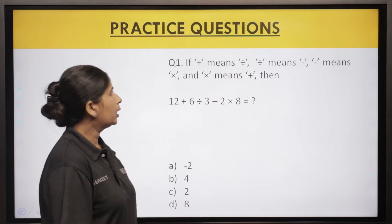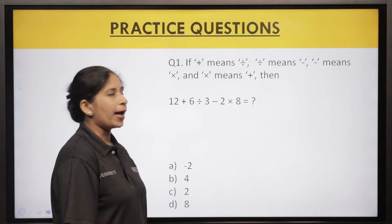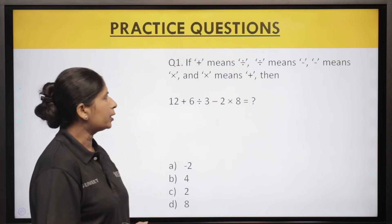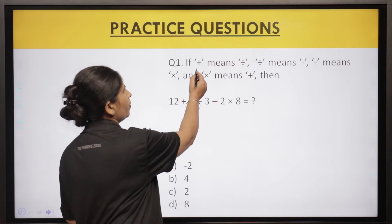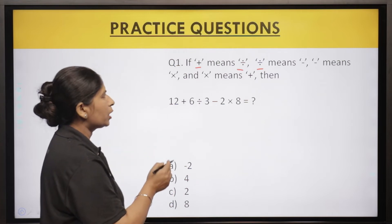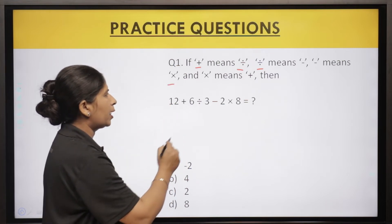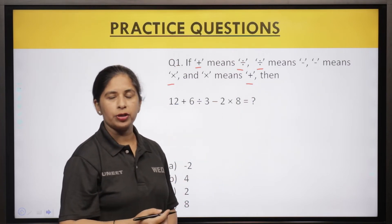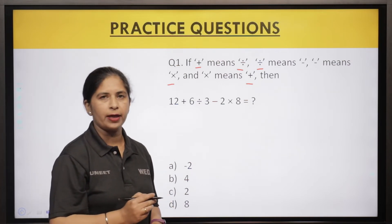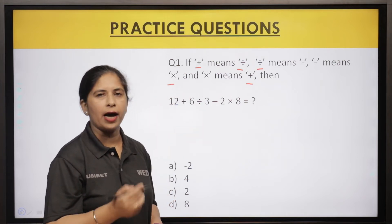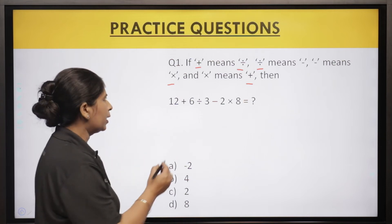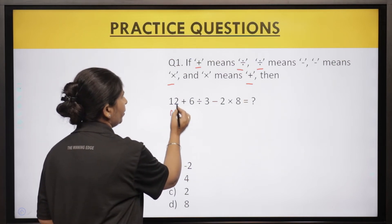Let's start solving a few sample questions. The first question is: if plus means divide, divide means minus, minus means multiply, and multiply means plus, then find the value of 12 + 6 ÷ 3 − 2 × 8. Pehle dhyan se samajhein — yahan pe operators hi interchange kar diye hain. Jahan bhi plus aayega aapko usko replace karna hai divide se, jahan divide aayega usko minus se, aur jahan minus aayega usko multiply se, aur multiply ko replace karna hai plus se.